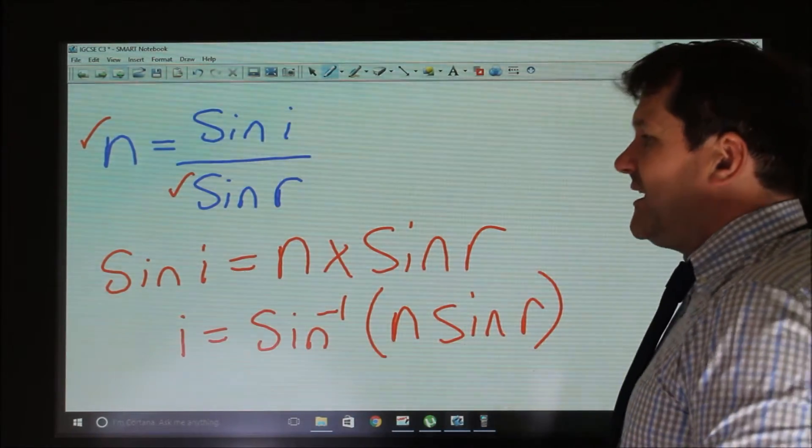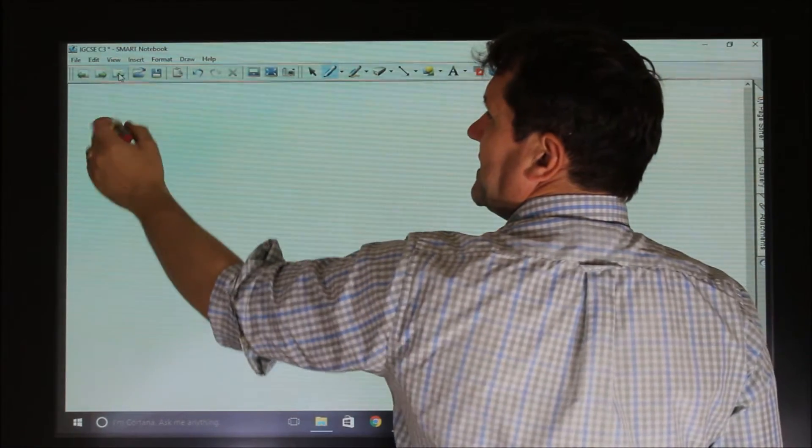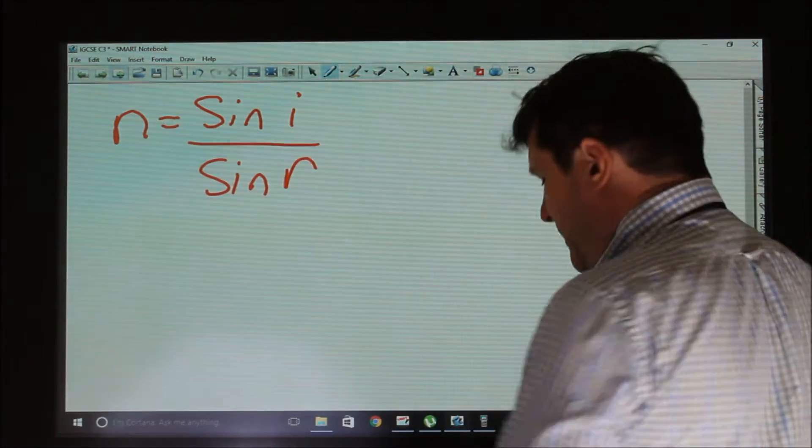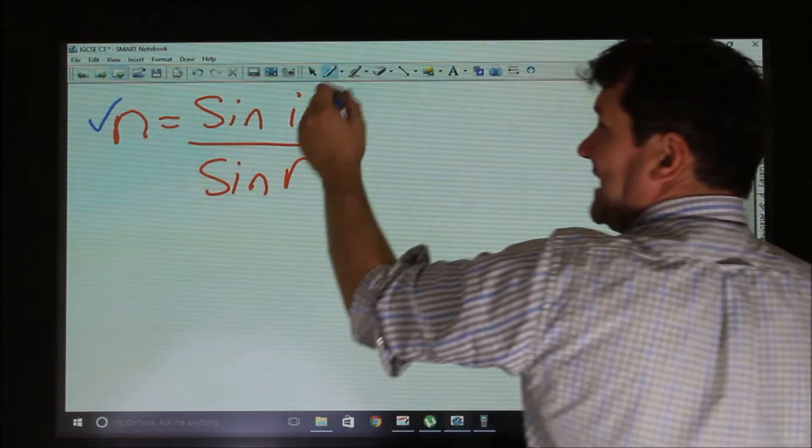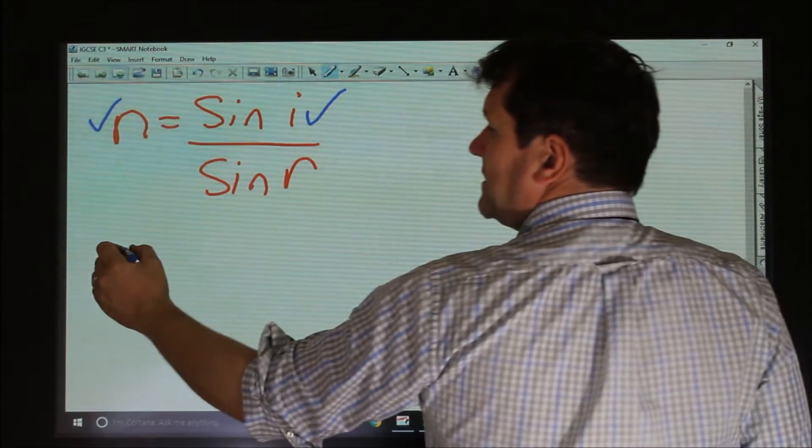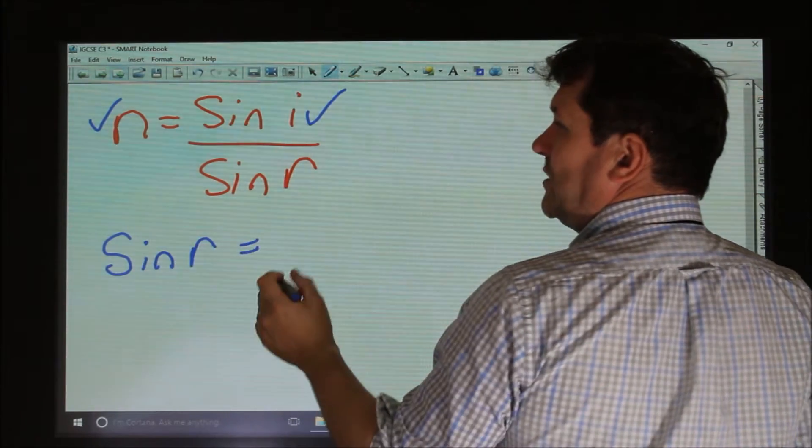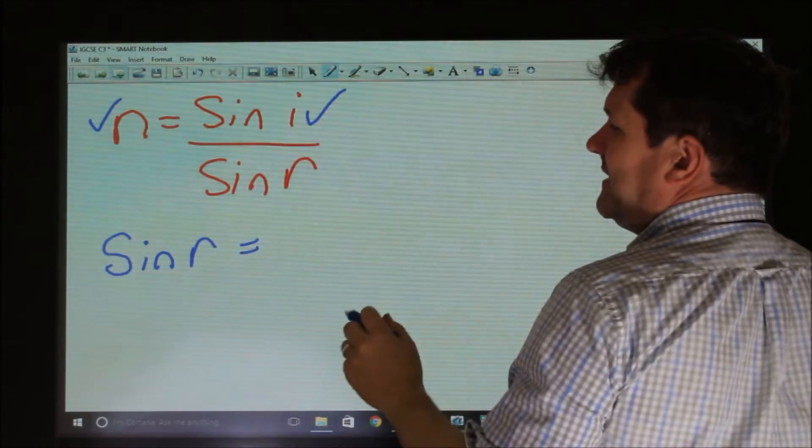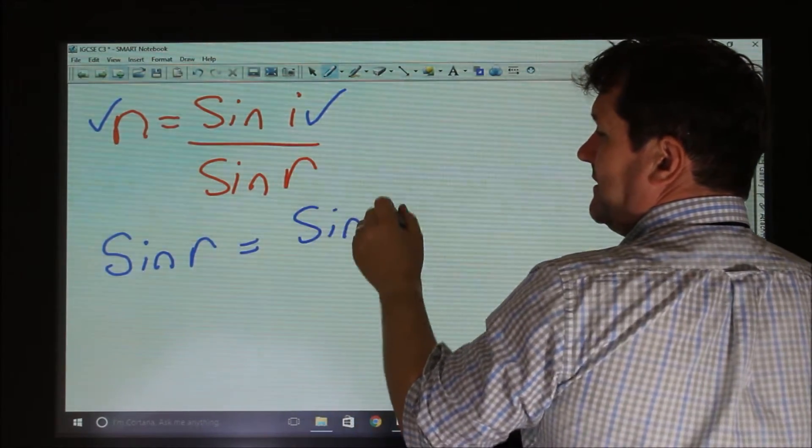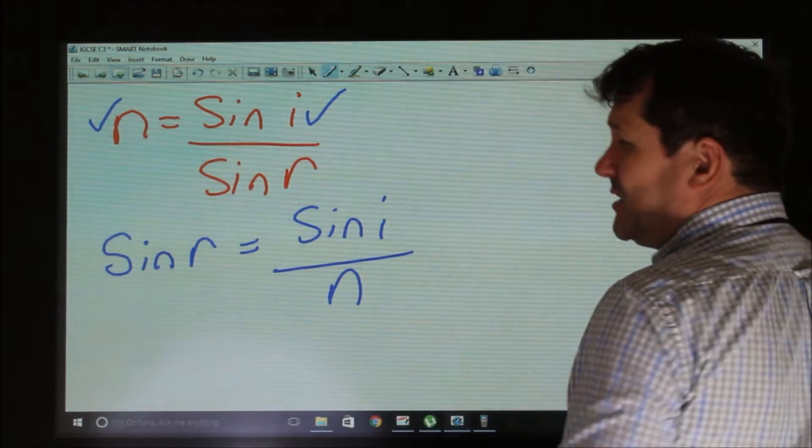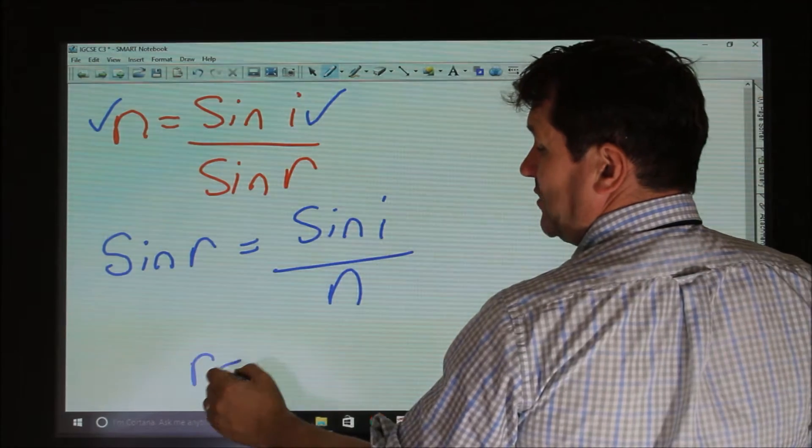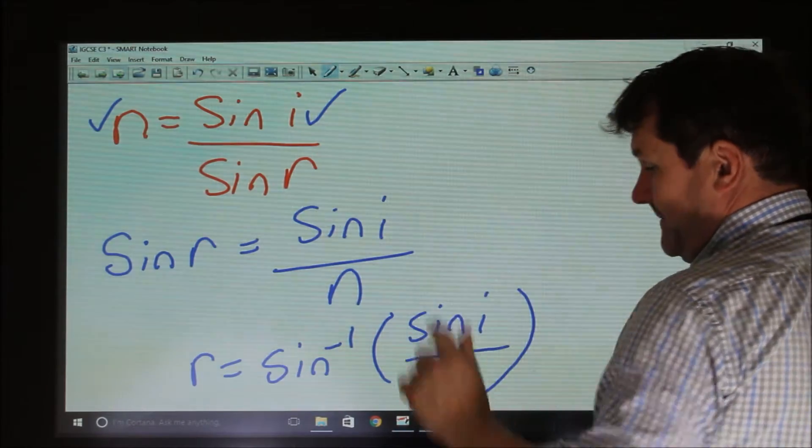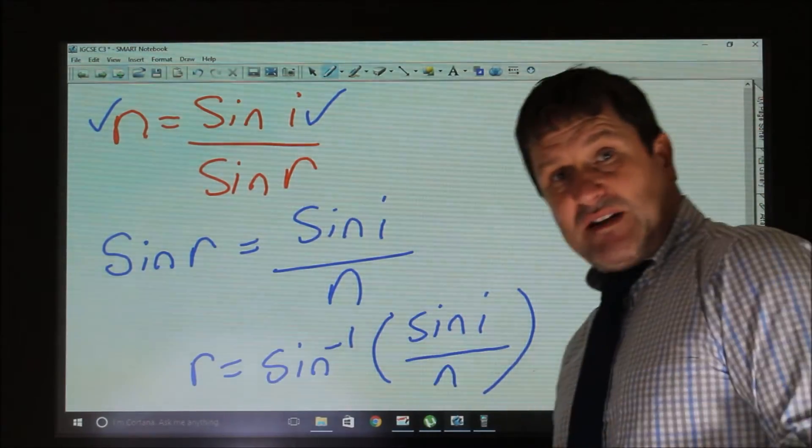And if we were given it the other way around, we could say N equals sine I over sine R. And if we were given N and sine I and we wanted sine R, sine R would equal, multiply both sides and take it to the top, and then divide both sides by N. So sine R becomes sine I over N. And because we want R on its own, R would equal the inverse sine of sine I over N.